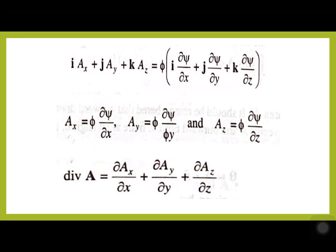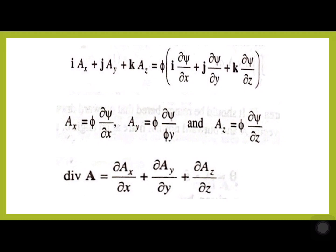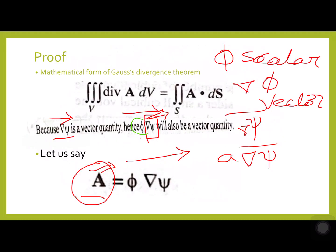Obviously, we know that any arbitrary vector function A can be written in terms of its components: i-bar times Ax plus j-bar times Ay plus k-bar times Az. So for our vector A-bar equals φ into del ψ, we expand the components accordingly.